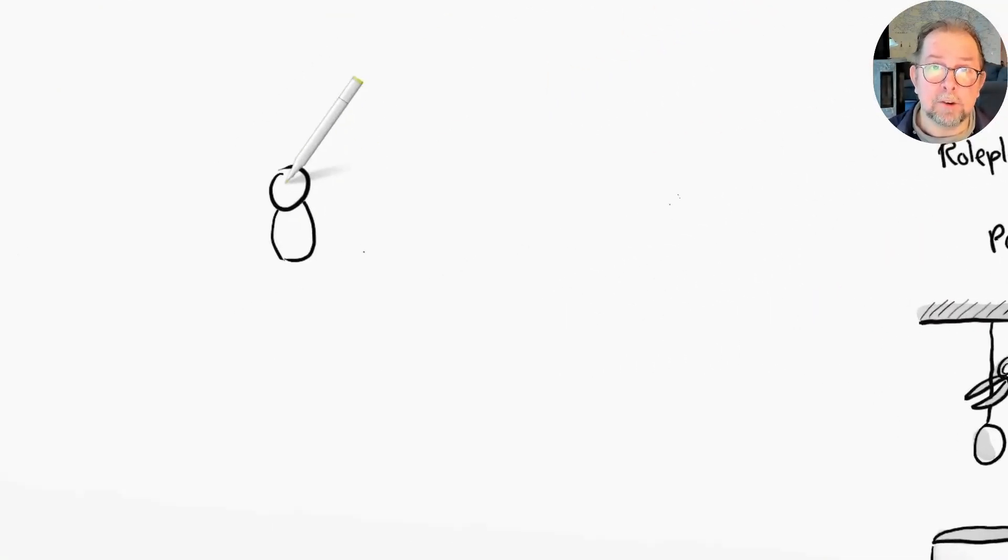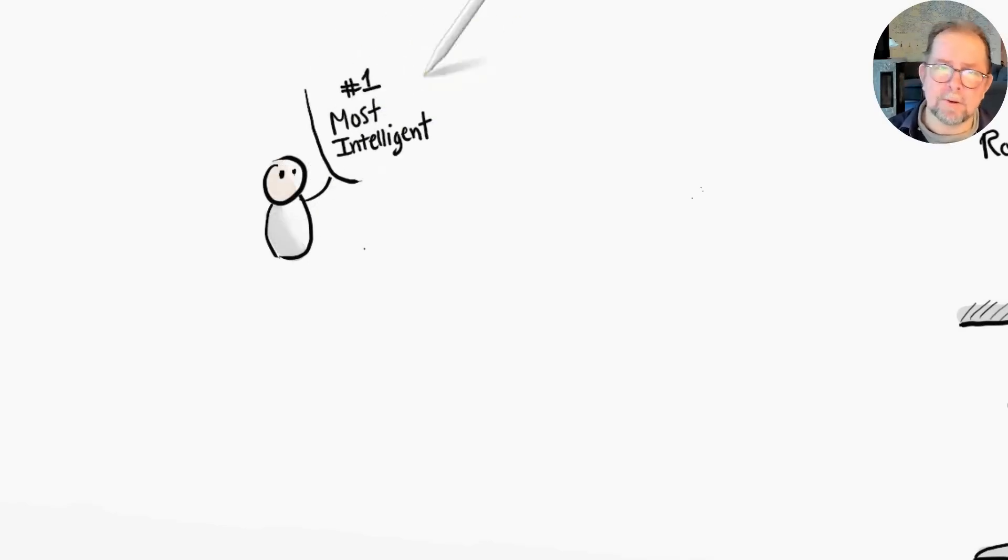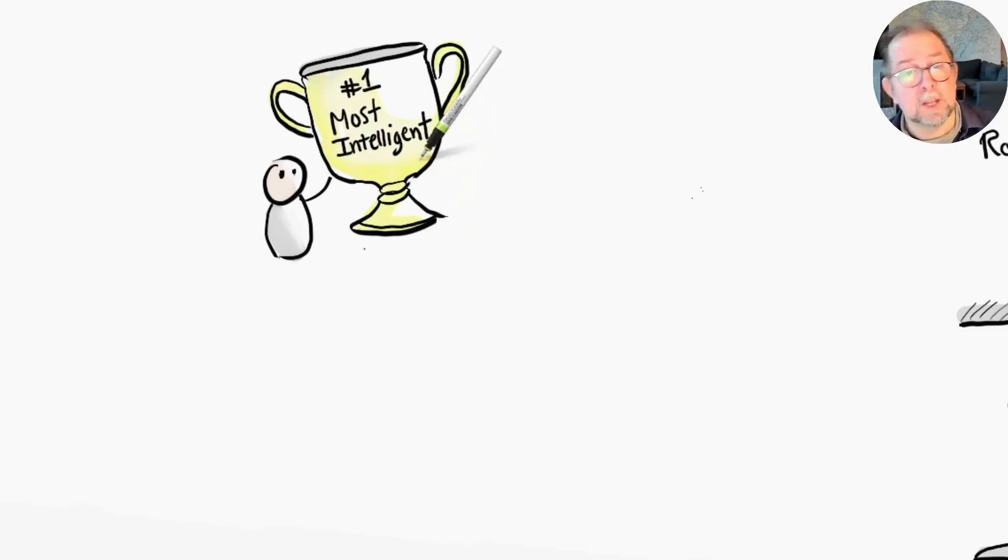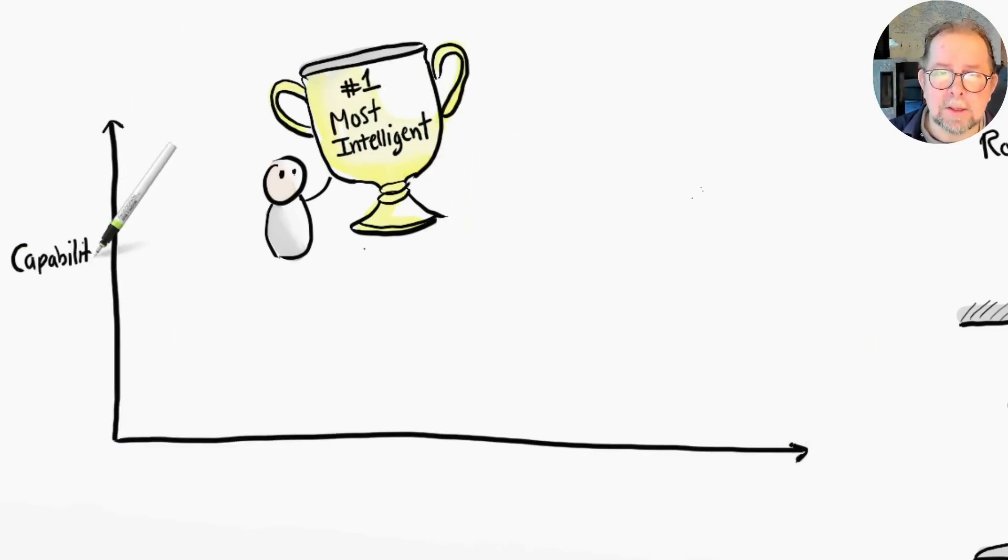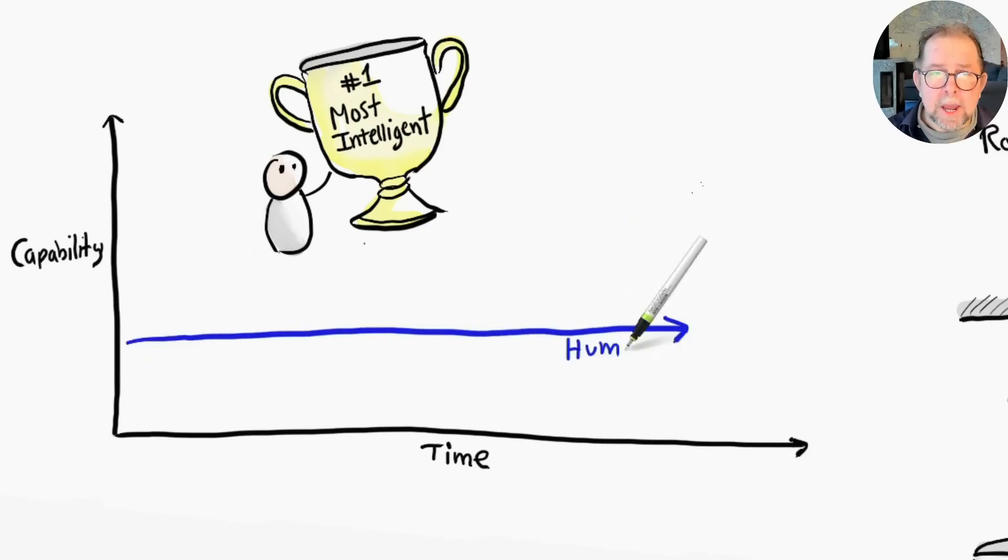Now let's take a step back and look at the implications. For 300,000 years or so, we Homo sapiens have been the most intelligent species on Earth - depending, of course, on how you define intelligence. But the thing is, our intellectual capabilities aren't really improving that much. Our brains are about the same size, same weight as they've been for thousands of years.